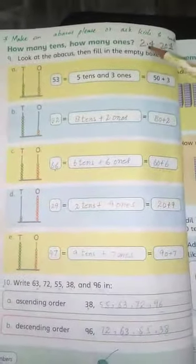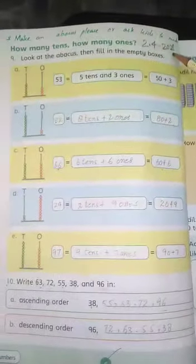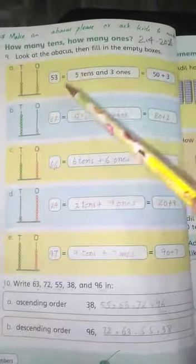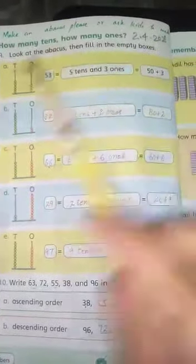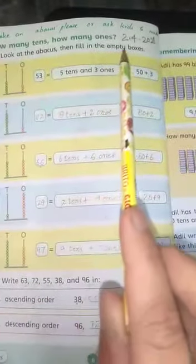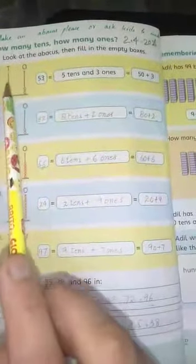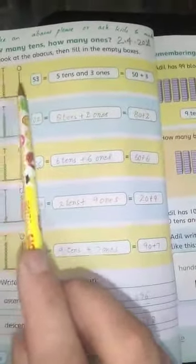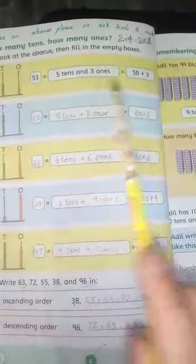We mentioned the date 2 April 2021. How many tens? How many ones? Question number 9: Look at the abacus then fill in the empty box. In abacus which you have beads, you have to count and fill the blanks.